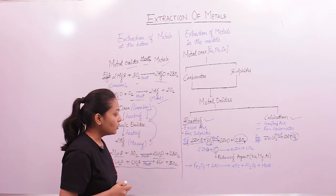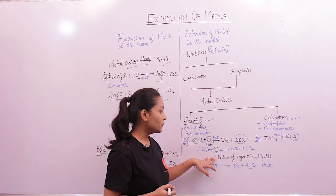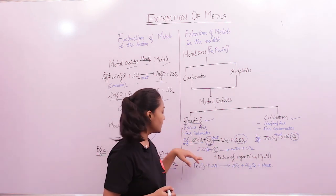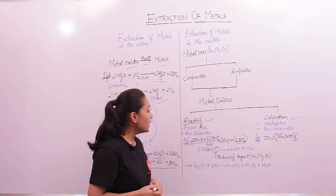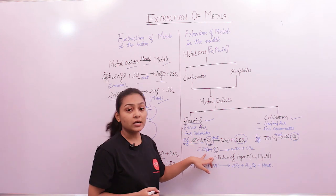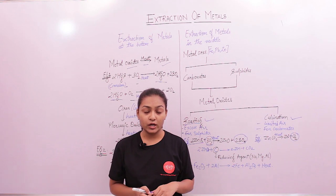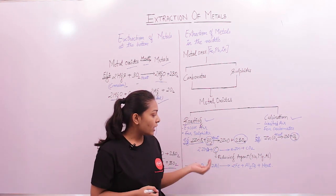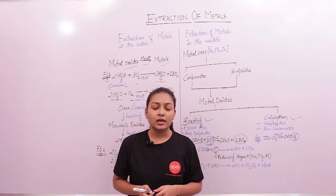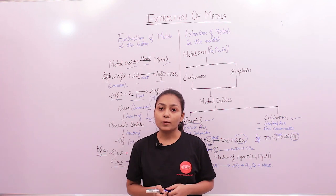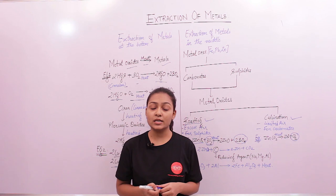Now that we have obtained the metal oxides, we can heat them in the presence of carbon to obtain the metal. For example, zinc oxide heated in the presence of carbon gives us zinc. Carbon here is used as a reducing agent. Other examples of reducing agents are sodium, magnesium, and aluminium — all highly reactive metals.